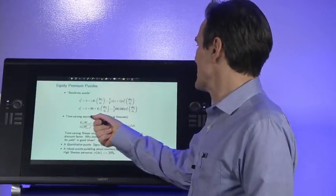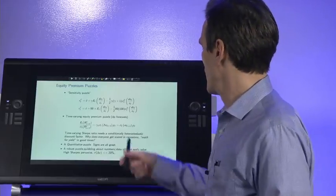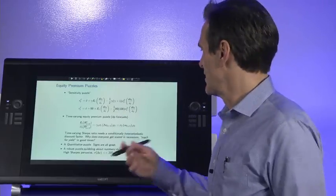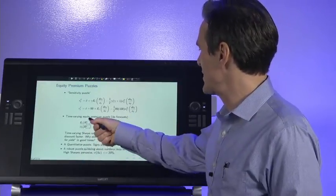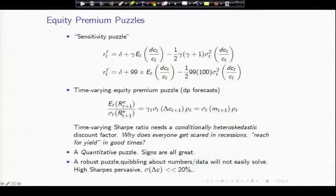There's more puzzles, too. The time-varying equity premium puzzle, we saw the dividend yields forecast returns. Well, our basic equation would tell us that, therefore, the conditional Sharpe ratio should vary over time, and that should be related to the time-varying risk aversion, time-varying standard deviation of consumption growth or correlation. A time-varying Sharpe ratio needs a time-varying volatility of the discount factor, conditionally heteroscedastic discount factor. We need to understand why everyone gets scared in recessions. Are they more risk averse or is there more volatility? Why do they reach for yield in good times?